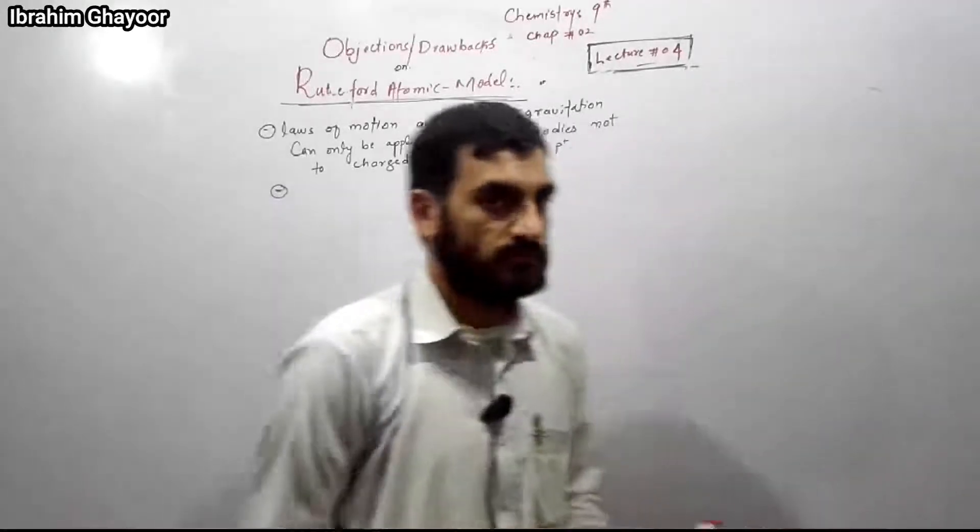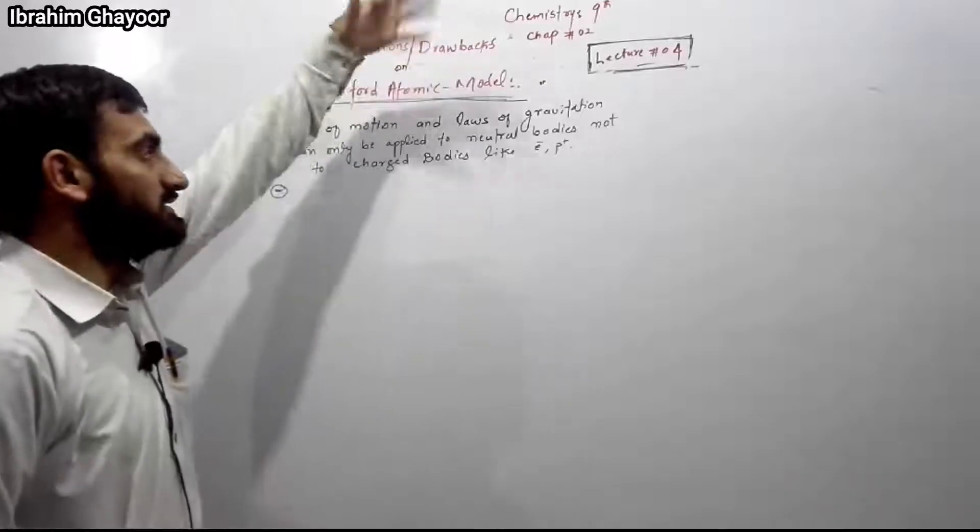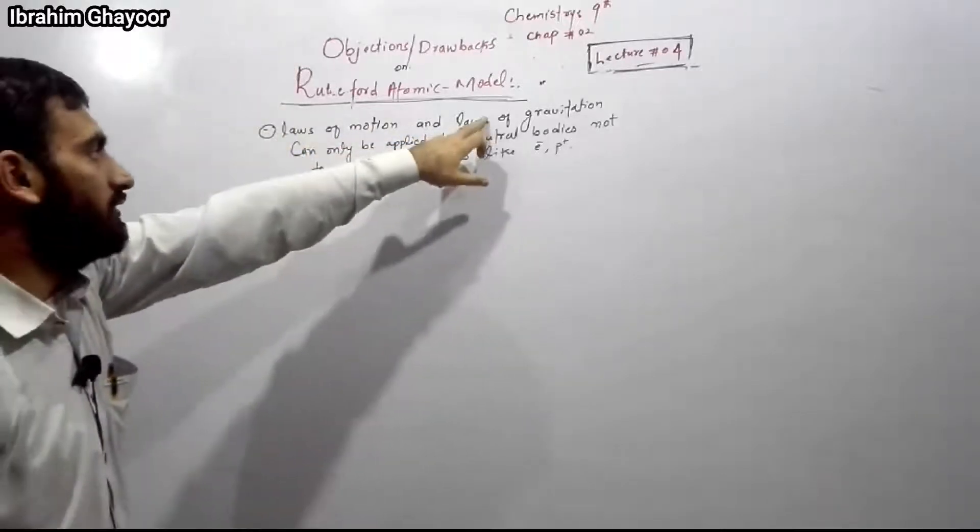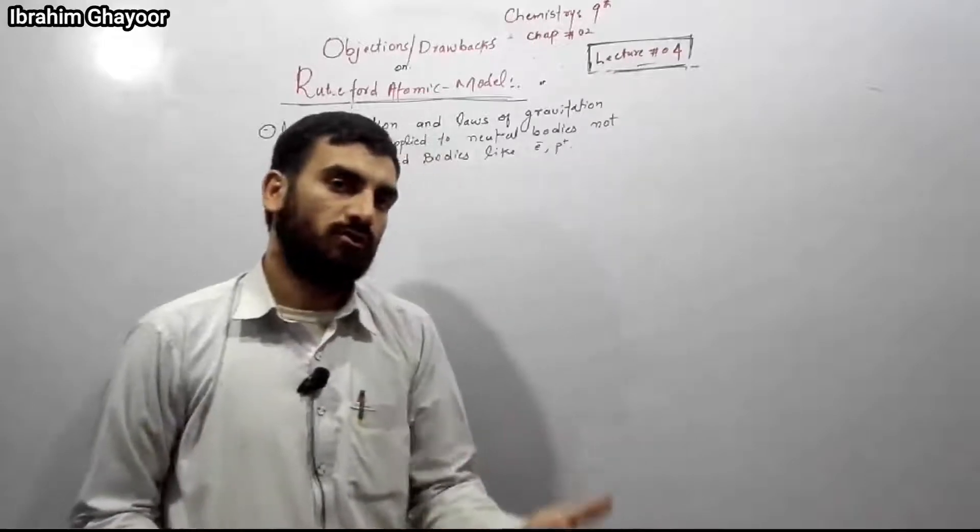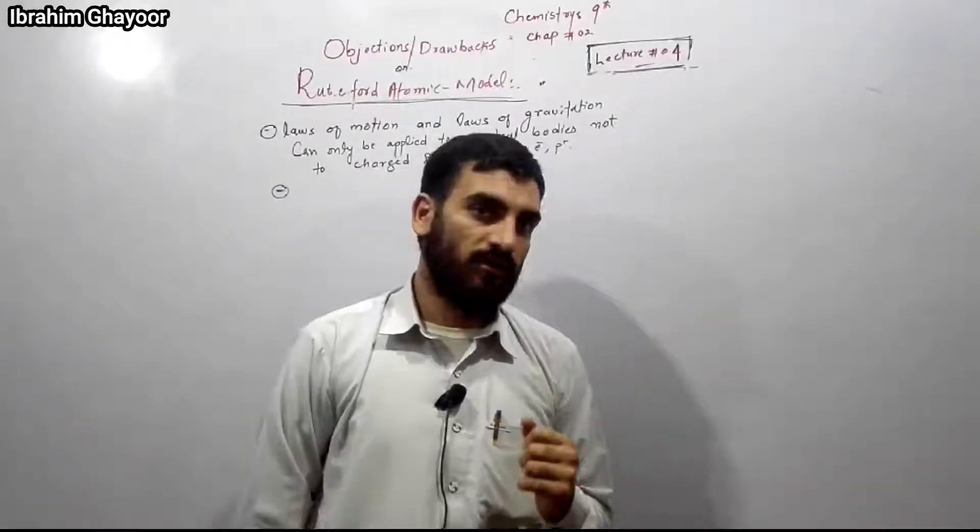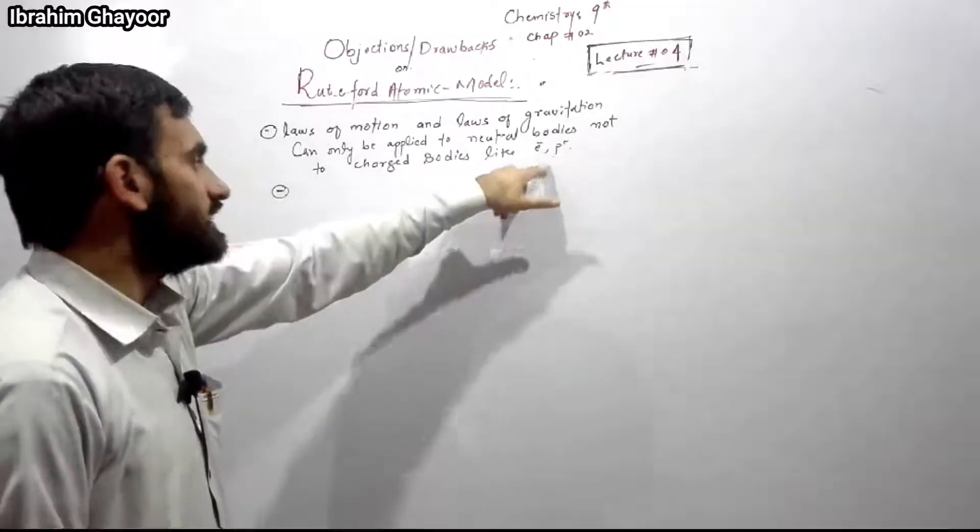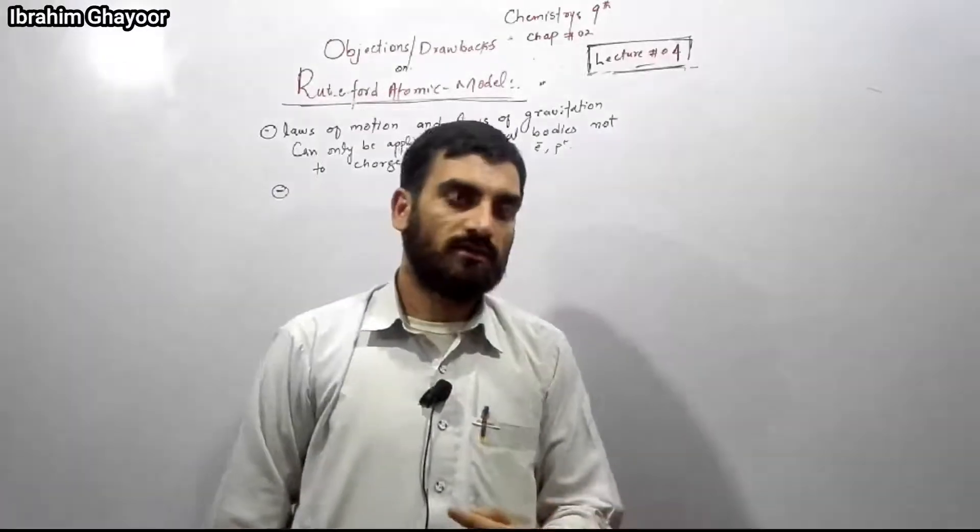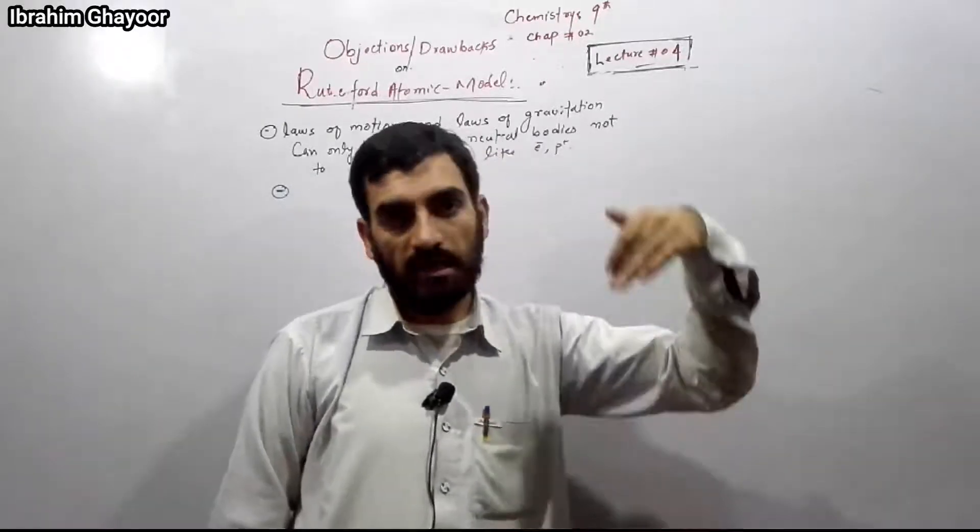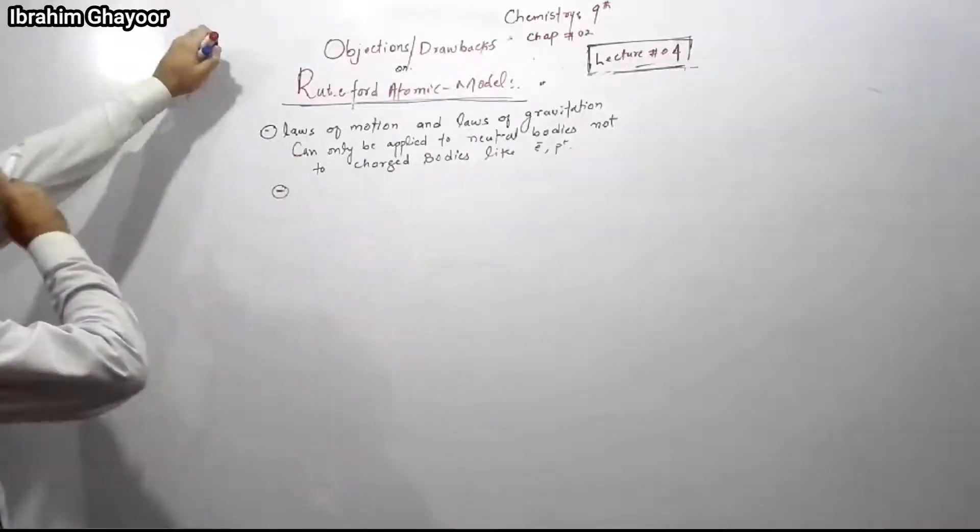Bismillahirrahmanirrahim. In this chemistry class, we discuss Rutherford's atomic model and its discrepancies. There are several objections to this model. The first objection is that Newton's law of gravitation can only be applied to neutral bodies, like the moon, Earth, or Jupiter. But electrons and protons are charged bodies, not neutral bodies, so this law cannot be applied to them.